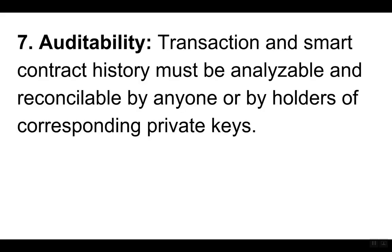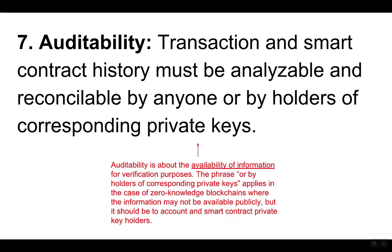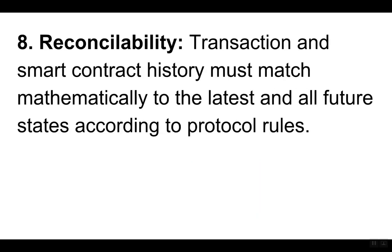Seven, auditability. Transaction and smart contract history must be analyzable and reconcilable by anyone, or by holders of corresponding private keys. Auditability is about the availability of information for verification purposes. The phrase 'or by holders of corresponding private keys' applies in the case of zero-knowledge blockchains, where the information may not be available publicly but should be to account and smart contract private key holders.